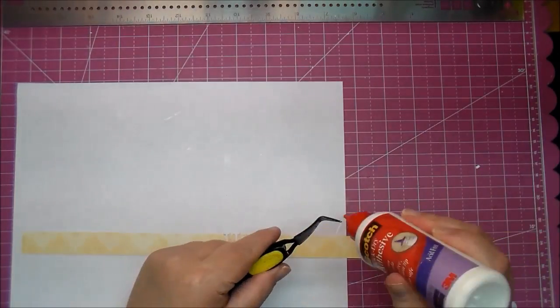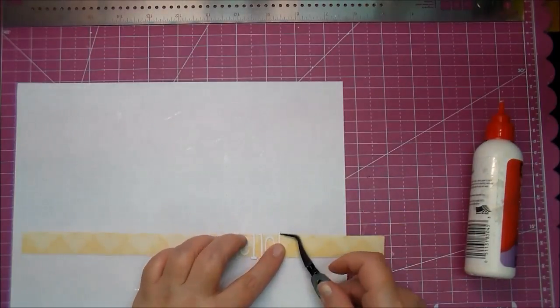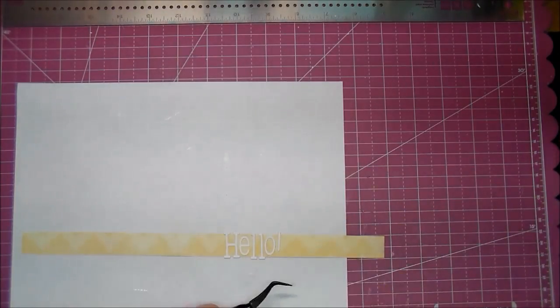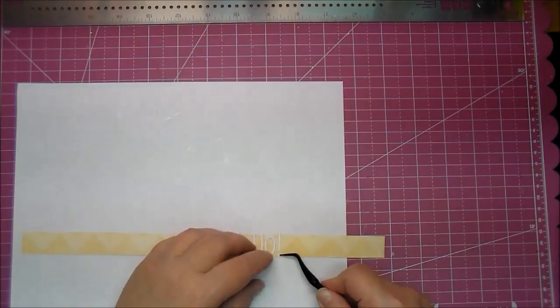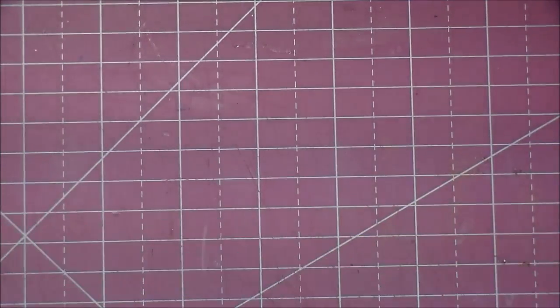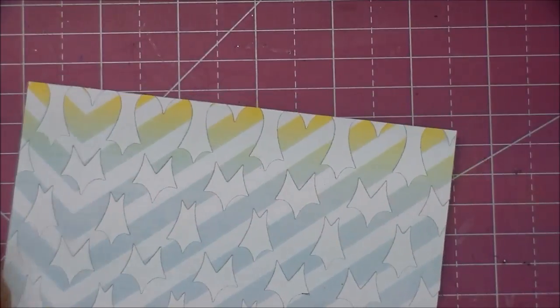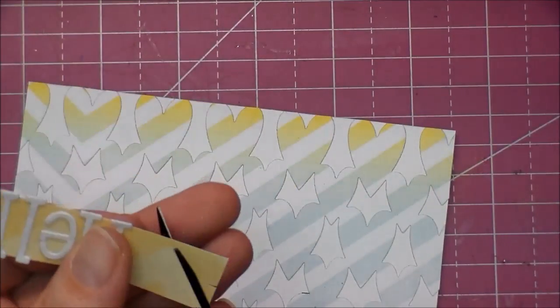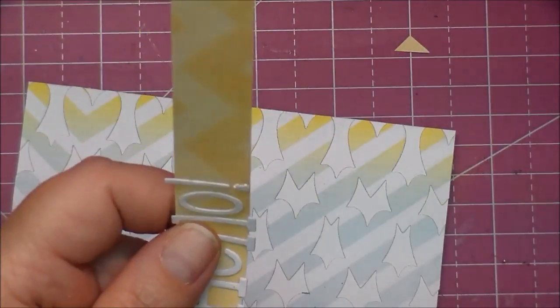The tweezers you see me using are reverse tweezers—they really help to hold small pieces in place while you're gluing them down. Now I will be cutting this into a fishtail on the end of my greeting and add that to the front of the card.